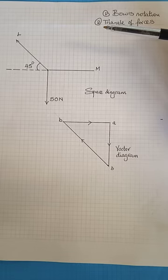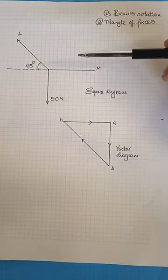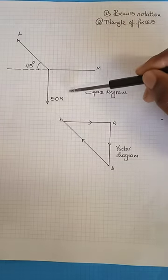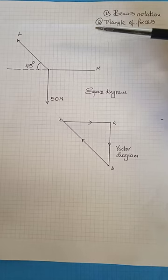We use lettering using capital letters. We do this in a clockwise direction. So that lettering in a clockwise direction in between the spaces is called Bose notation.